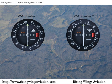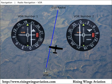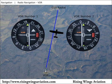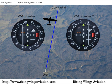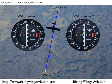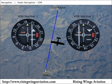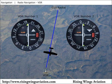If you attempt to track a radial from the station with a TO flag being displayed, the needle will work in reverse. The pilot would need to fly away from the needle, not towards it, in order to keep it centered. This is also true if flying TO the station with a FROM flag. To alleviate this reverse sensing, make sure the TO FROM flag displays the correct indication. If it does not, rotate the OBS until the desired flag appears.